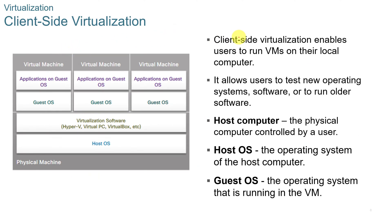Client-side virtualization enables users to run VMs on their local computer. It allows users to test new operating systems, software, and to run older software. For example, on my personal computer I've got a copy of Windows 7, a couple copies of Windows 10, three or four different Linux distributions, and I've been able to run Mac OS, Android, and Chrome OS as a Chromebook on my virtual machine on my local computer.